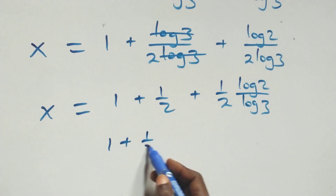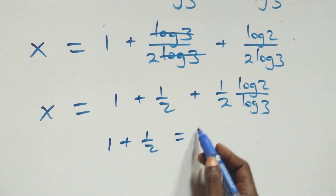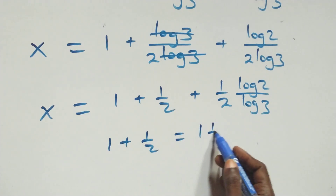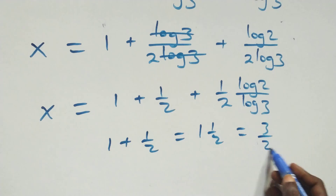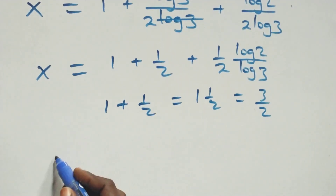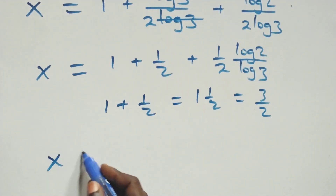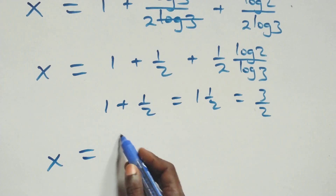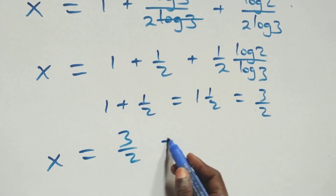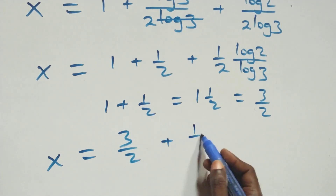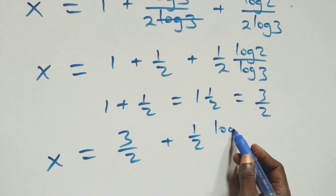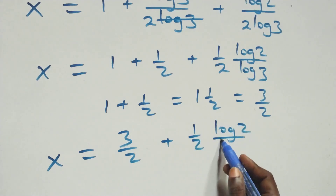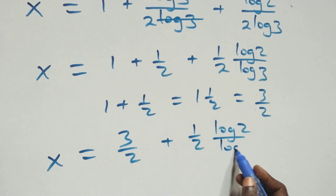From here, 1 plus 1 over 2, combining as 3 over 2. Then what we have here becomes x equals to 3 over 2 plus 1 over 2 times log 2 over log 3.